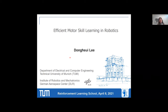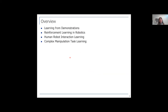Today I will provide my perspective and some recent research activities on robot motor skill learning. My talk has four parts: the first is about learning from demonstrations and reinforcement learning in robotics, and I will increase the complexity of the task the robot has to learn, covering human-robot interaction and some complex manipulation tasks.